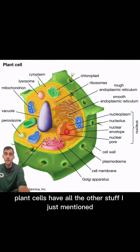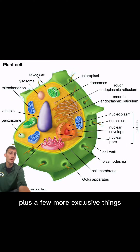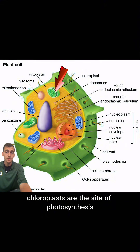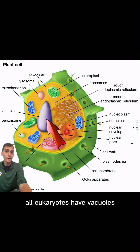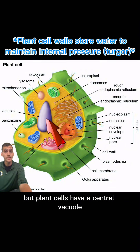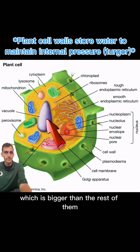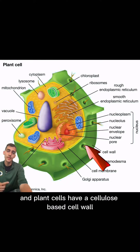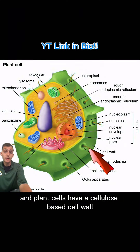Plant cells have all the other stuff just mentioned, plus a few more exclusive things. Chloroplasts are the site of photosynthesis. All eukaryotes have vacuoles, but plant cells have a central vacuole, which is bigger than the rest of them. And plant cells have a cellulose-based cell wall.